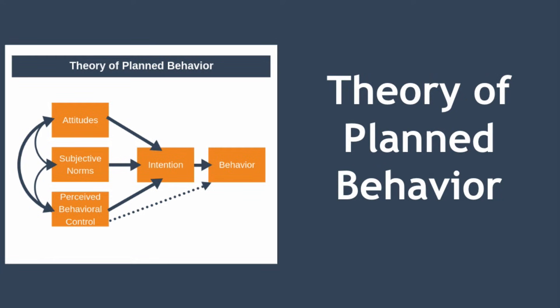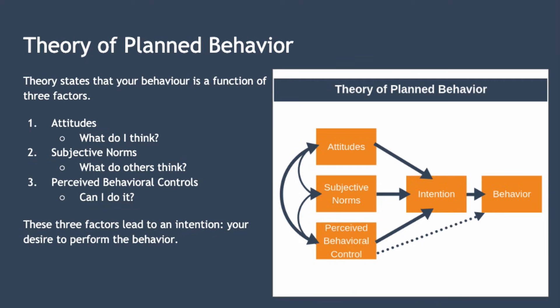Hello and welcome to today's lesson where we're looking at the theory of planned behaviour. The theory of planned behaviour states that your behaviour is a function of three factors: attitudes, subjective norms and perceived behavioural control. Let's take a closer look at each.